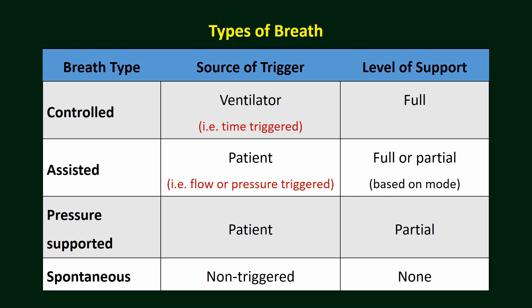There are different types of breath in mechanical ventilation. In a controlled breath, it is not triggered by the patient; the ventilator delivers the breath — it is time-triggered and full support is provided. In an assisted breath, the patient triggers the breath (flow or pressure trigger) and full or partial support is provided according to the mode used. In a pressure support breath, the breath is again patient-triggered and partial support is provided. In a spontaneous breath, the patient takes a breath with no ventilator support provided.